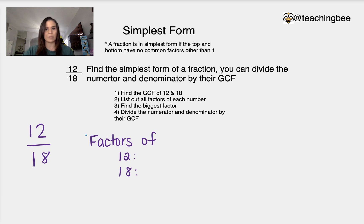So we have a problem here that we're going to be working with which is 12 over 18. In this case we're going to find the simplest form of a fraction. We can divide the numerator and the denominator by their greatest common factor. That's the best way to do it. There's other options that we could always do as well.